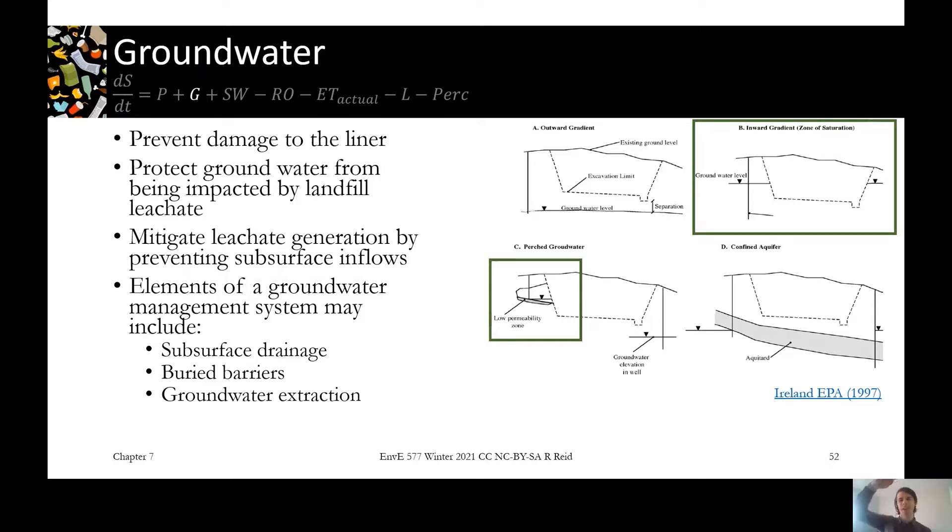So we build our landfill on top of the water table and then we just have to worry about any percolation getting out and getting into the groundwater. But that's not always possible depending on where you live and what kind of constraints you have. You might have a situation like B where the groundwater is actually above parts of your landfill and you're trying to keep it out as well as to keep it from pushing your liner system in.